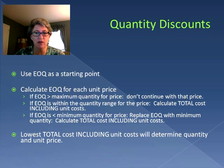If the EOQ falls within the quantity range for a price, then we'll calculate the total cost including unit costs. If the EOQ is too small to get that price, we replace the EOQ with the minimum quantity in order to get that price, then calculate the total cost including unit costs. The lowest total cost will determine our quantity and unit price.